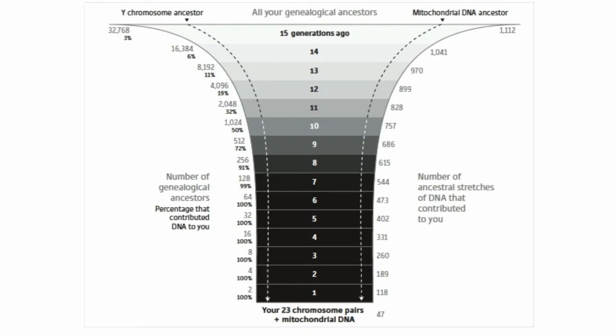To understand this, let's look at the figure. From the bottom up, you have 23 chromosome pairs, plus your mitochondrial DNA. The mitochondrial DNA comes from the mitochondria outside the nucleus of your cell, and was the first type of ancient DNA researchers were able to extract, as there are multiple copies of mitochondria compared to only one nucleus — and thus much more of it, making it easier to extract from thousand-year-old pieces of bone.